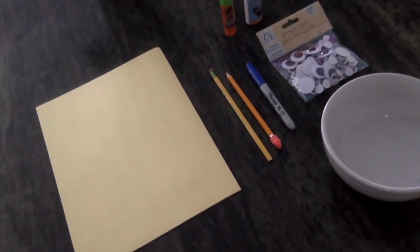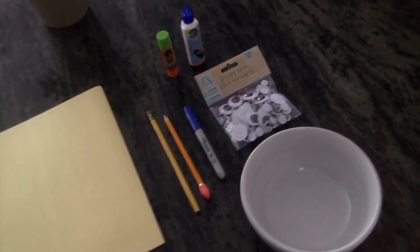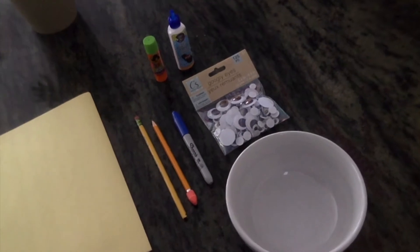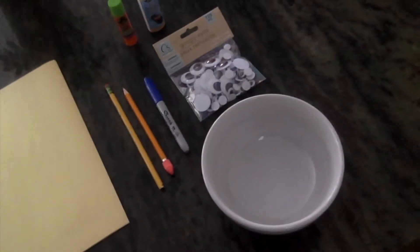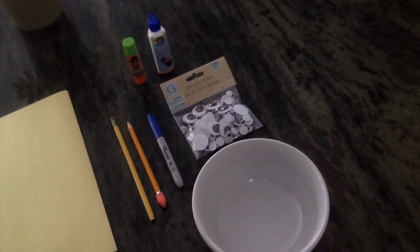So what you're going to need for this activity is a couple sheets of construction paper, one unsharpened pencil and a sharpened pencil, a marker, a bowl, a glue stick, and optional googly eyes.